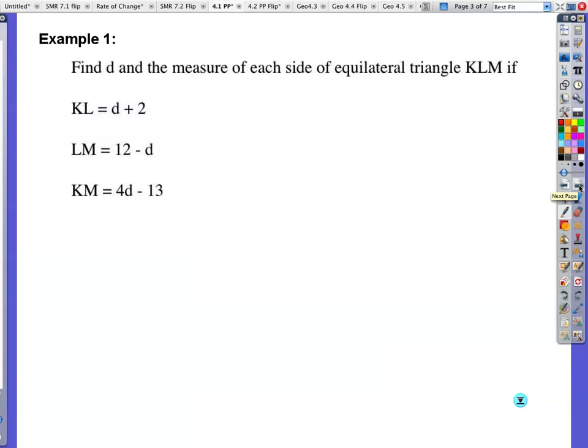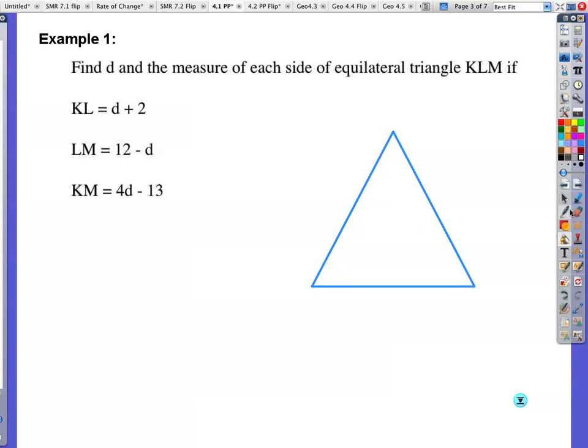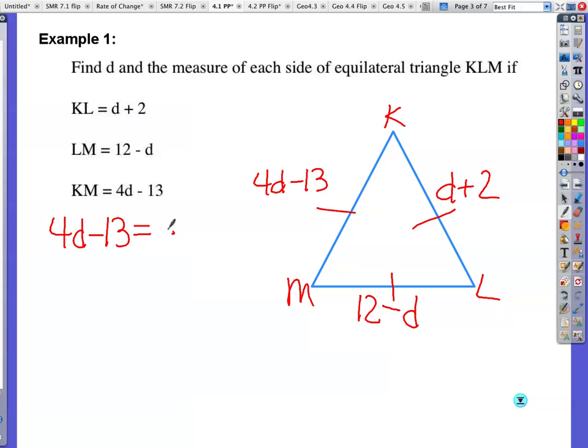Example one, find d and the measure of each side of equilateral triangle KLM, if these sides are given as such. So let's go ahead and look at our triangle here. KLM, draw a picture. You're going to have to start by drawing a picture. KL is d plus 2. LM is 12 minus d. And KM is 4d minus 13. Now your first thought, and this is what students try to do, they try to set all three of these equal to each other. If it's equilateral, really to solve for d, I only need to set two of the three equal to each other. So d plus 2 has to be equal to 4d minus 13. But you know what? If you wanted, you could set 4d minus 13 equal to 12 minus d. And somebody else could set 12 minus d equal to d plus 2. And we should all get the same answer. But I'm only going to show you one of those three.